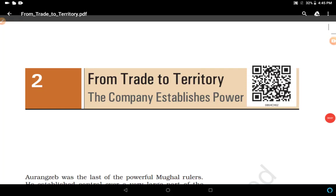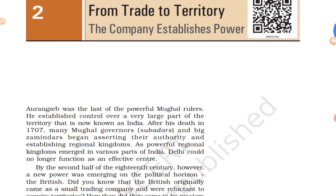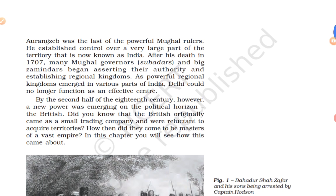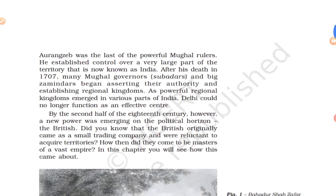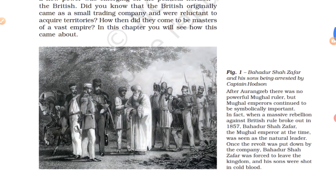Hello students, today we will study chapter number two of history: 'From Trade to Territory – The Company Establishes Power.' This is a very important chapter, so watch this video completely till the end carefully and note the main points while watching. Let's start. See this picture, Figure 1: Bahadur Shah Zafar and his sons being arrested by Captain Hudson.